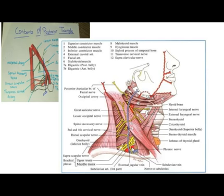The third part of the subclavian artery and subclavian vein can also be seen in the supraclavicular triangle; I have drawn the third part of the subclavian artery here. The commencement of the transverse cervical artery and vein can also be seen in the supraclavicular triangle. The lower part of the external jugular vein can also be seen in the supraclavicular triangle; its course has already been discussed in previous lectures.